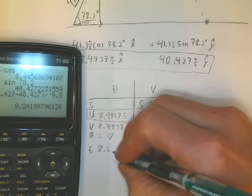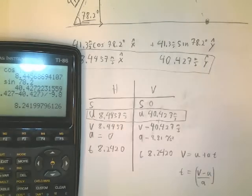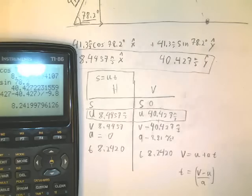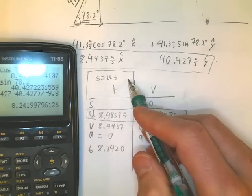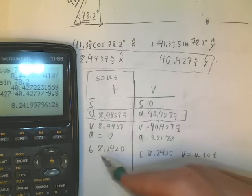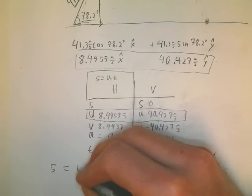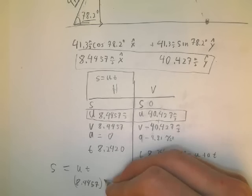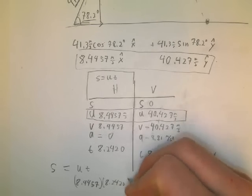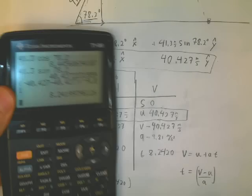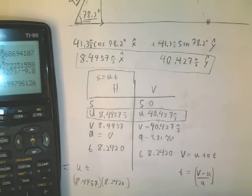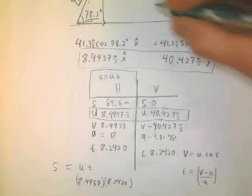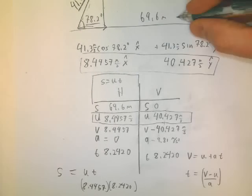Now we're all set in the horizontal direction. All we ever do is S equals UT. That's all we ever do. There's no acceleration. So we can just find the displacement here, S equals UT, which is 8.4457 times 8.2420. And we get 69.6 meters. So this distance here is 69.6 meters.